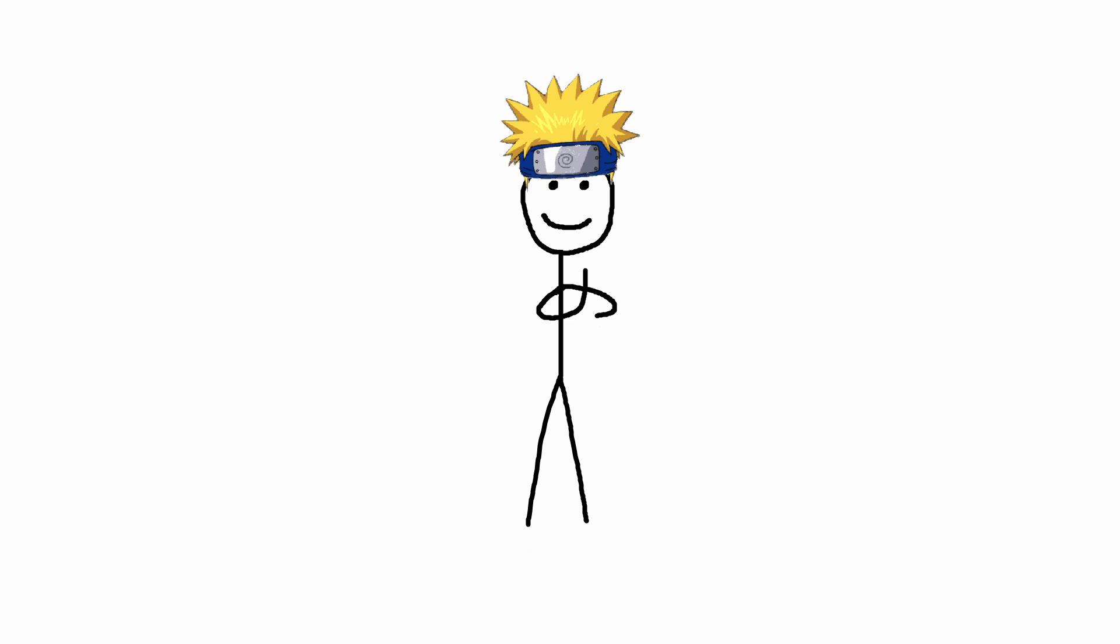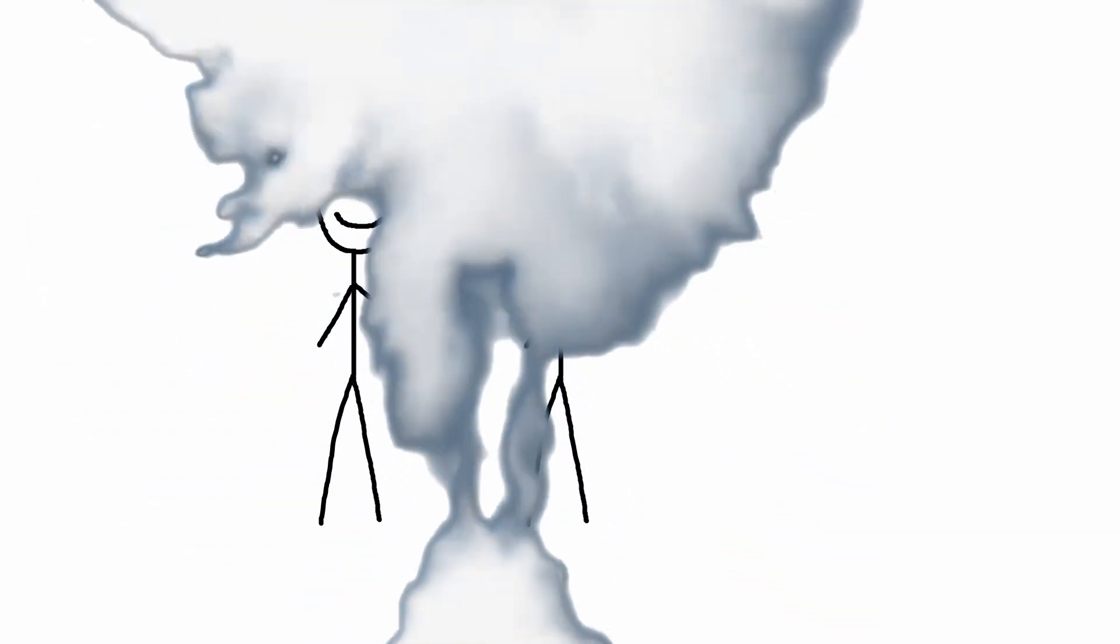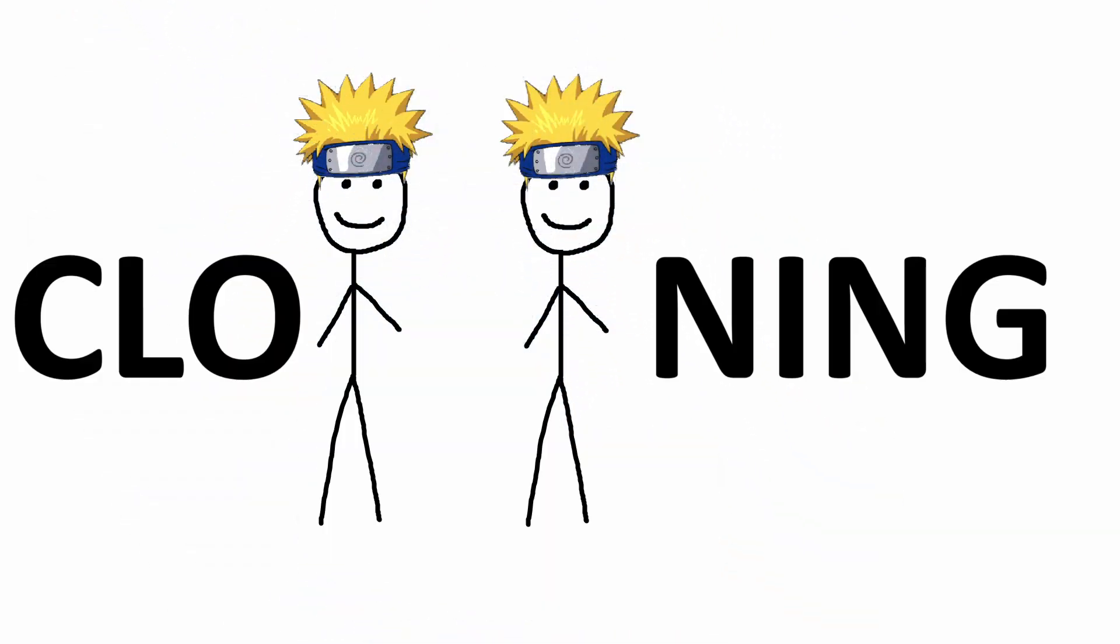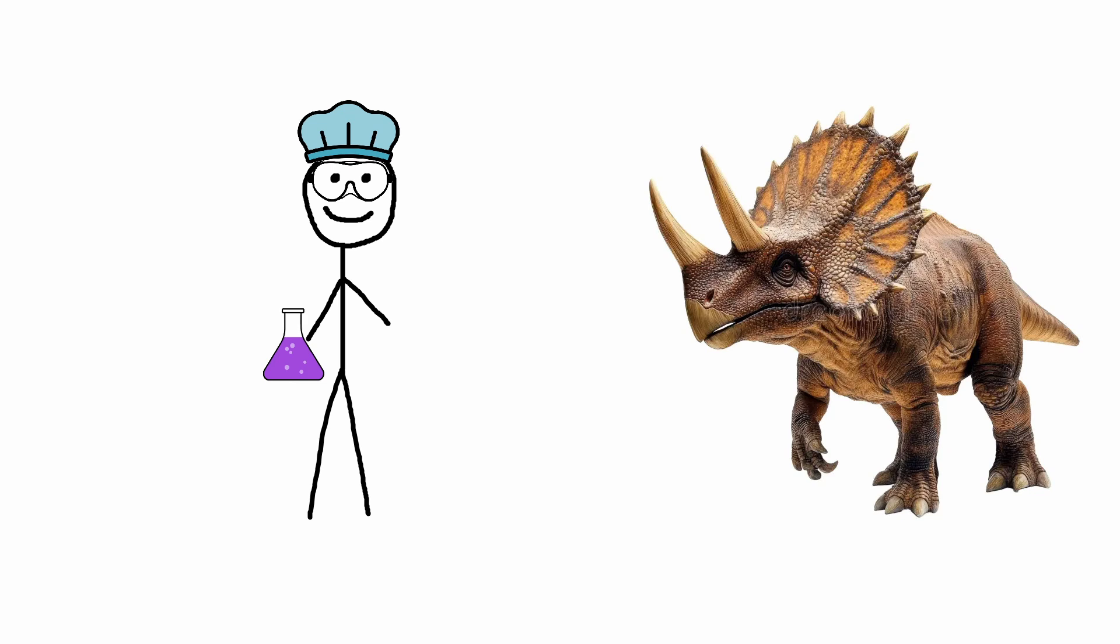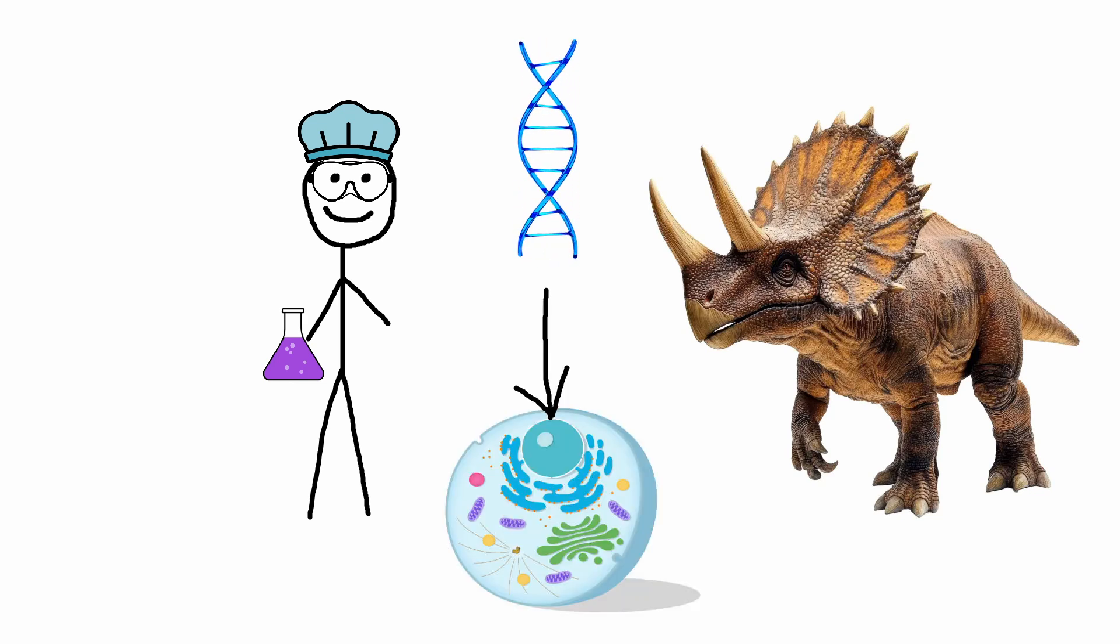The first de-extinction method is cloning. I only know about cloning from watching Naruto. Well, that makes two of us. To clone an extinct animal, you need to have the animal's preserved DNA, which comes from the core of a cell.